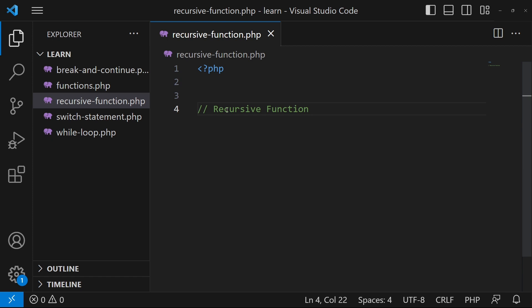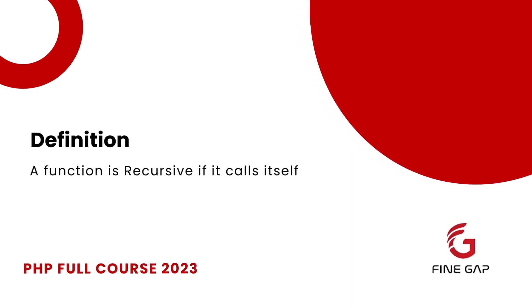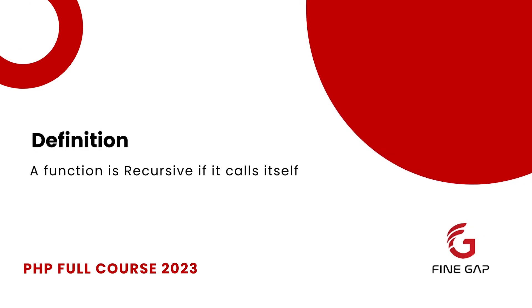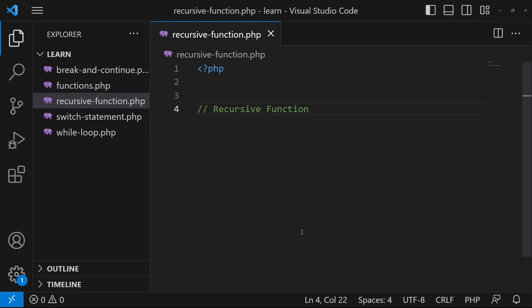In this video we will try to understand that. Let me show you its definition first on my screen. A function is recursive if it calls itself. When a function calls itself in its body, we can say that it is a recursive function. Let me teach you with an example.